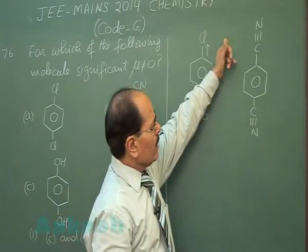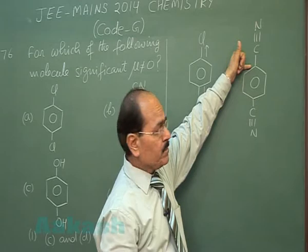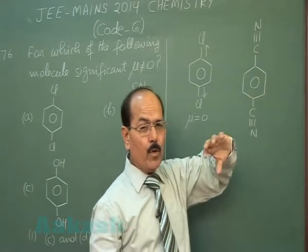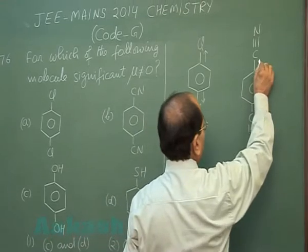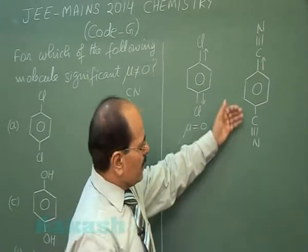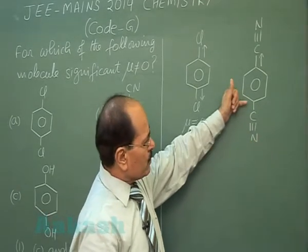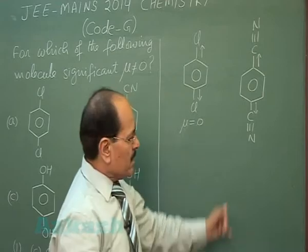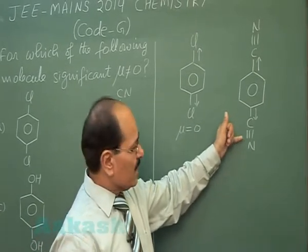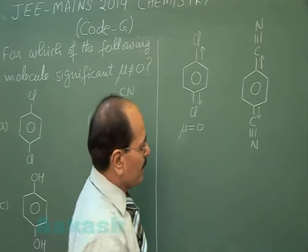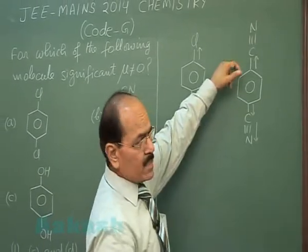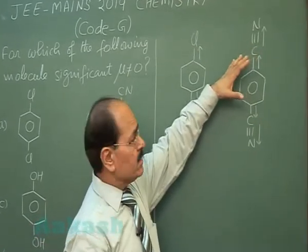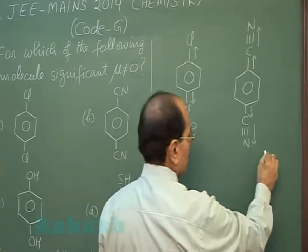In compound B, the cyanide groups are attached to benzene. The sp-hybridized carbon is more electronegative than sp²-hybridized carbon, so there is a bond dipole moment directed towards the carbon of the cyanide group. The C≡N bond is also polar. However, the resultant of these bond dipole moments cancels out symmetrically, so compound B also has zero dipole moment.